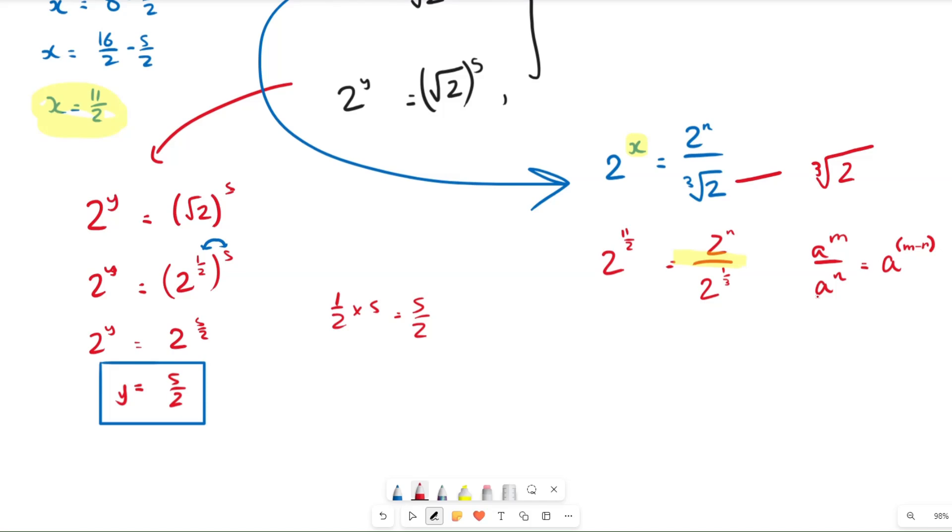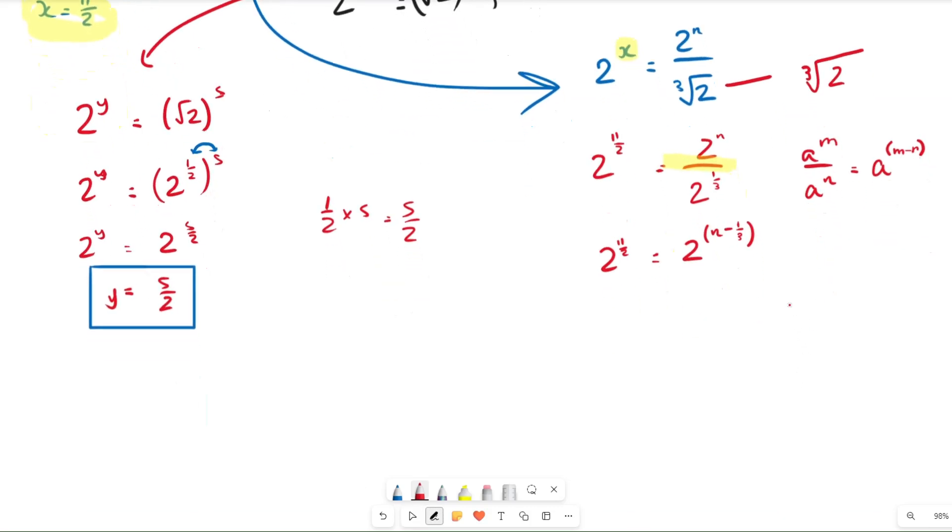So we're going to do exactly that. So 2 to the power of 11 over 2 equals 2 to the power of, and here we've got n minus a third. And exactly the same thing as this bit here, we're just going to equate the indices because the bases are the same. So we can say that 11 over 2 equals n minus a third.